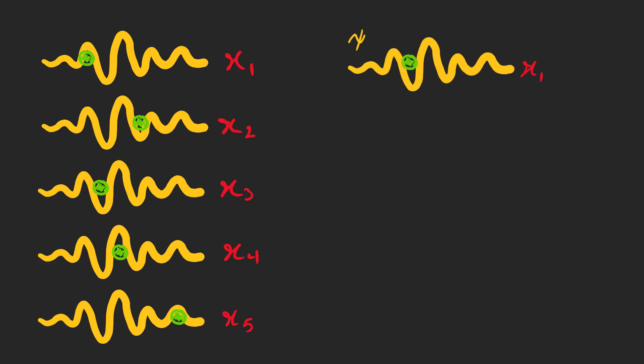We can do the same thing by measuring the position on the first particle, but it changes the wave function. And our second measurement will be on the particle with a different wave function psi prime.